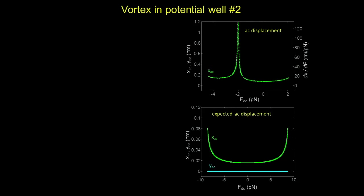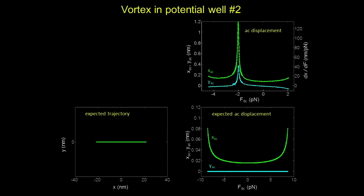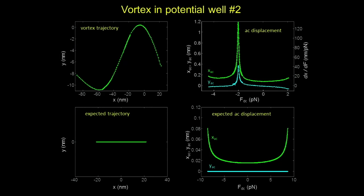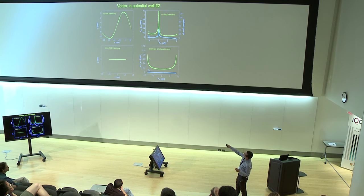We observe a big softening in the central part of the well — a very loose vortex — but not much softening on the edges. Also, the y-component is a significant fraction of the x-component, meaning if I push in x the vortex displaces in y. Another way to see this is in the x-y trajectory: you would expect a straight line but what we observe is an S-shape. The vortex does a kind of slalom, and even more interestingly, the inflection point of the trajectory corresponds with this very soft point — a discrepancy with basic pinning theory.